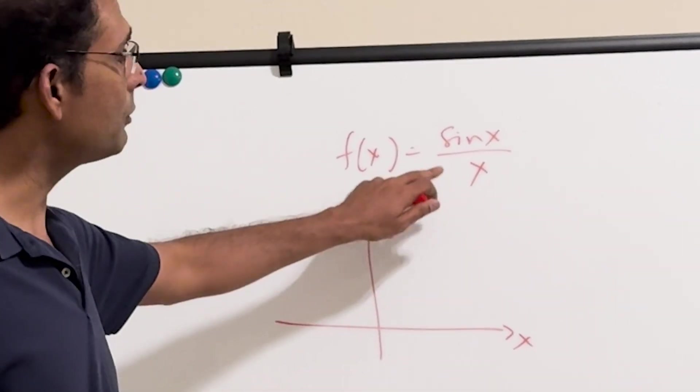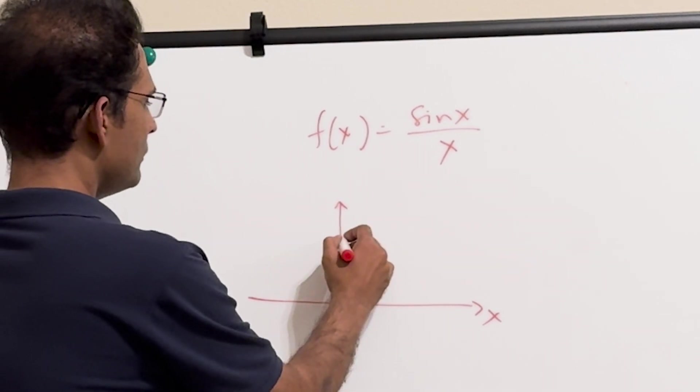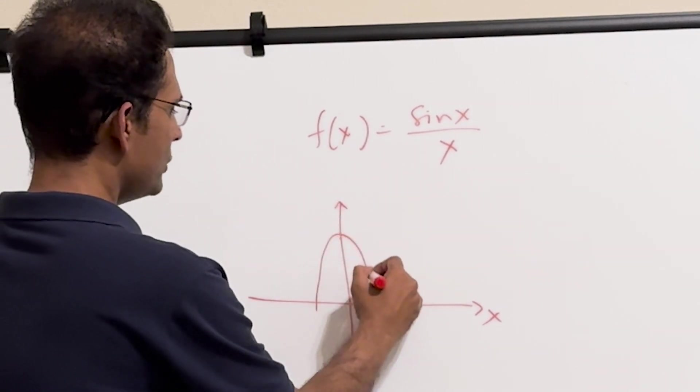If I plot the graph of this function, then how does it look like? So you have a graph which kind of looks like this.